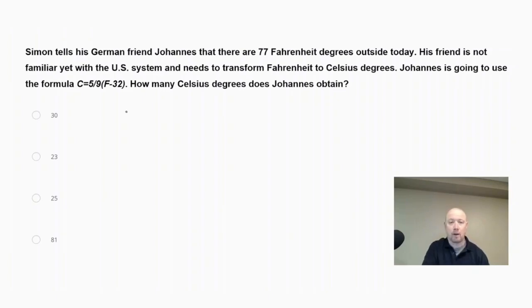So we have the formula Celsius is equal to 5 ninths times the quantity F minus 32. By order of operations, we're going to substitute in our Fahrenheit, which is 77. So we get C equals 5 ninths and then we're going to plug in 77. So 77 minus 32, since it's in the grouping symbol parentheses, we're going to do that first.